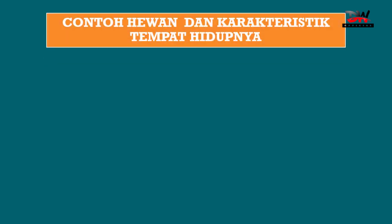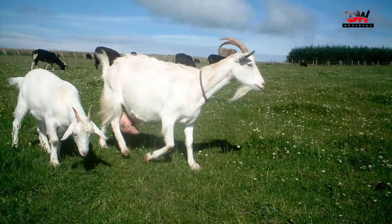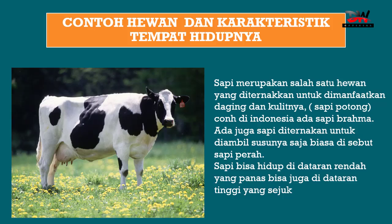Contoh hewan dan karakteristik tempat hidupnya. Yang pertama adalah sapi. Sapi merupakan salah satu hewan yang diternakkan untuk dimanfaatkan daging dan kulitnya, yang biasa disebut sapi potong. Contoh di Indonesia ada sapi Brahma dan sapi Limosin. Ada juga sapi yang diternakkan untuk diambil susunya saja, biasa disebut sapi perah. Sapi bisa hidup di dataran rendah yang panas maupun dataran tinggi yang sejuk.